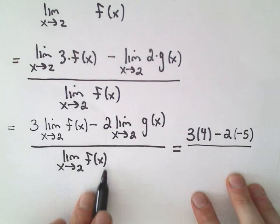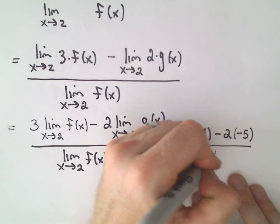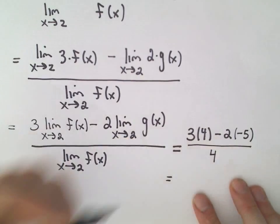And we just said the limit as x approaches 2 of f of x, that's giving us the value 4. Now we're in business, we can just do our arithmetic.